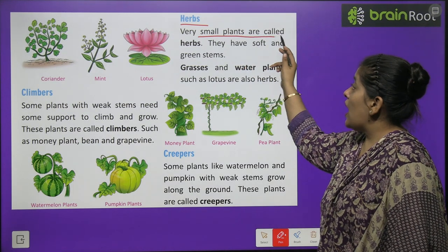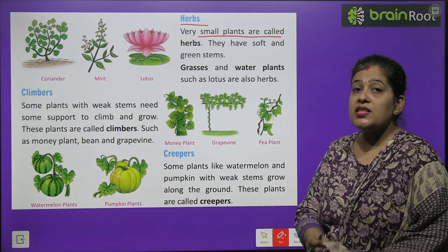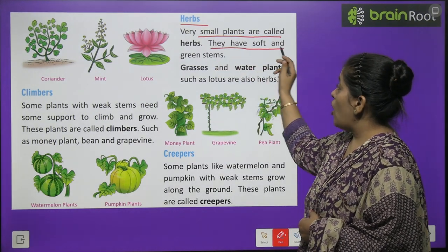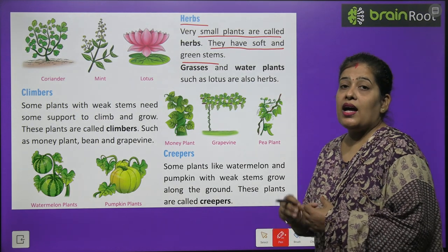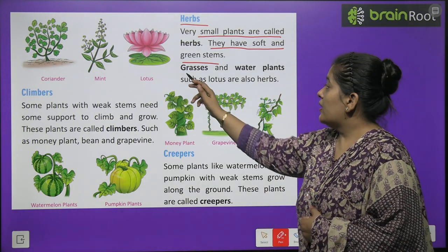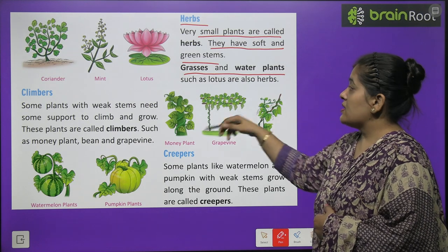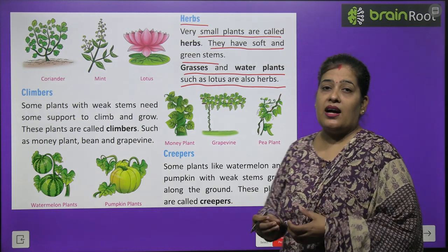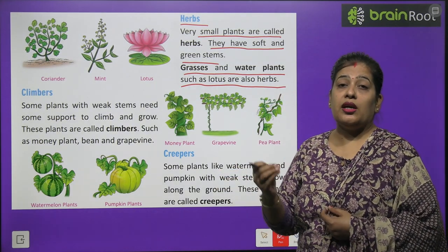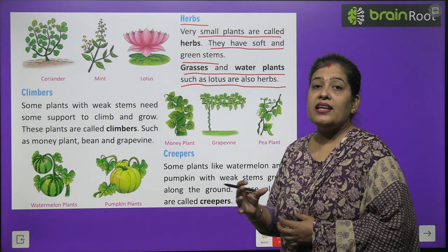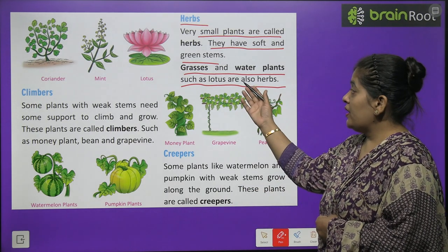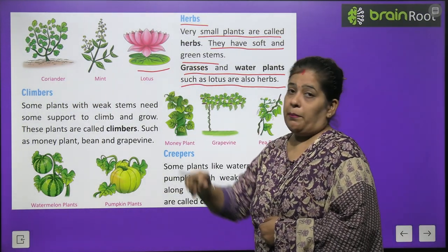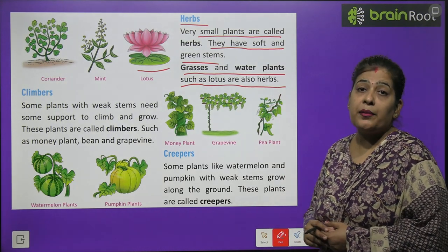Very small plants are called herbs. They have a soft and green stem — their stem is green and very tender. Grasses and water plants such as lotus are called herbs. Green grass is very delicate, very weak, and green in colour — it is an example of a herb. The lotus plant growing in water is also a herb.